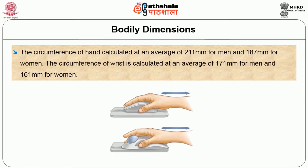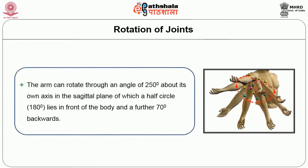Bodily dimensions: The circumference of the hand is calculated at an average of 211 mm for men and 187 mm for women. The circumference of the wrist is calculated at an average of 171 mm for men and 161 mm for women. Rotation of joints: The arm can rotate to an angle of 250 degrees about its own axis in the sagittal plane, of which 180 degrees lies in front of the body and a further 70 degrees backwards.